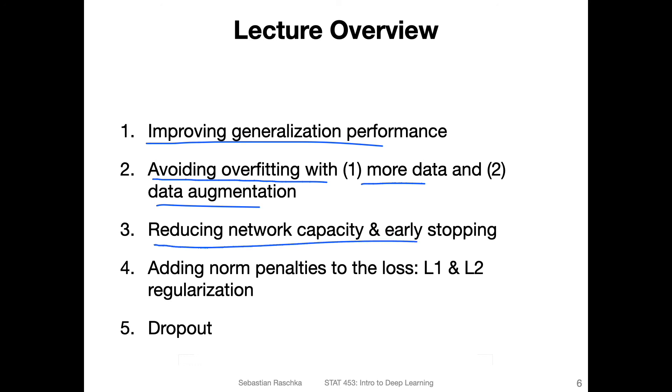And then here we will talk about reducing the complexity of the model, like reducing the network capacity, and early stopping. That means stopping the training process early when we observe that we have a good validation performance, and further training would make the performance worse. We will talk about a classic technique called L2 regularization, also a little bit about L1 regularization, although it's less commonly used. These are methods for modifying the loss function, like adding a penalty. And then finally, we will talk about probably the most common method that is currently used in deep learning - dropout is still one of the most common methods. It's essentially a method for randomly dropping neurons. And we will see how that can help the neural network training performance and generalization performance.